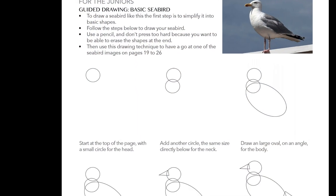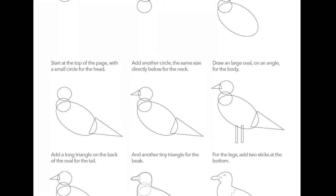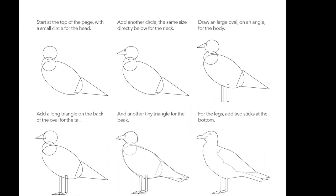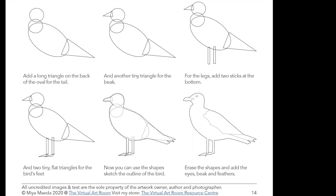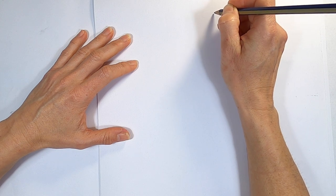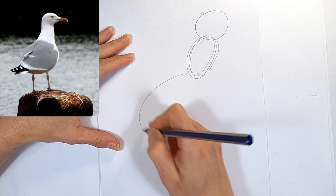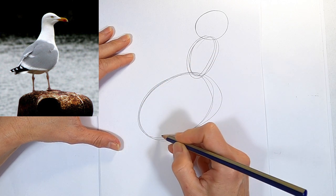To start you need to draw a seabird. The best way to do this is to break the shape of the bird into basic shapes. All of these seabirds start out as circles, ovals and triangles. Here's a small circle for the head, then an oval for the neck, then a large oval for the body and a triangle for the tail.